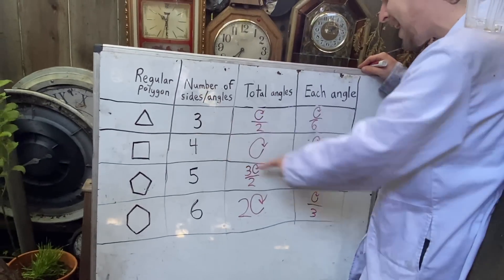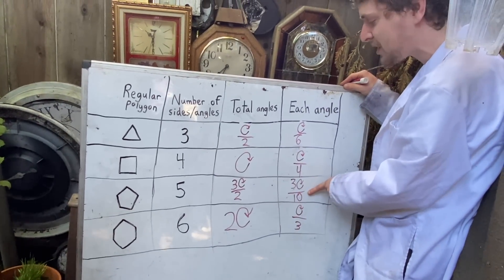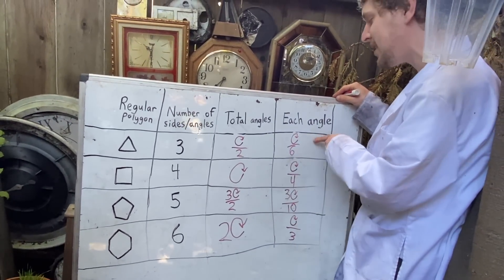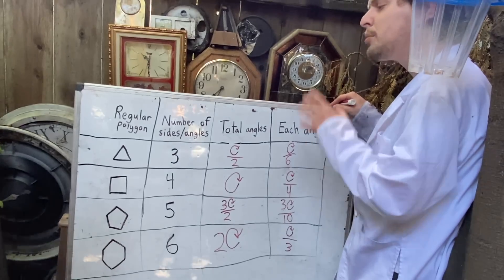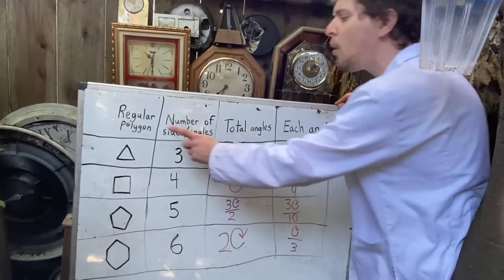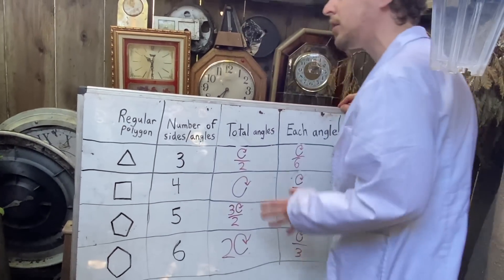And the fact that the pentagon ended up a little messier there, compared to these other three, actually relates to a superpower that only these three regular polygons have.